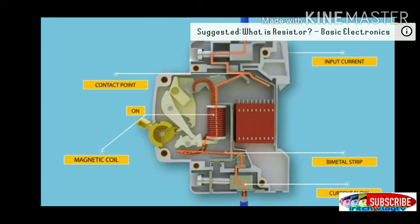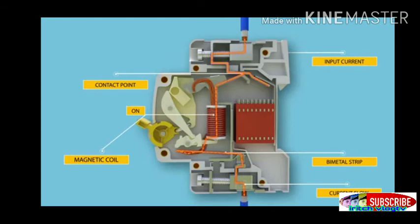Under overload condition, the current through the biometallic strip causes the temperature of it to rise. The heat generated within the biometallic is enough to cause deflection due to thermal expansion of metals. This deflection further releases the trip latch and contacts get separated.